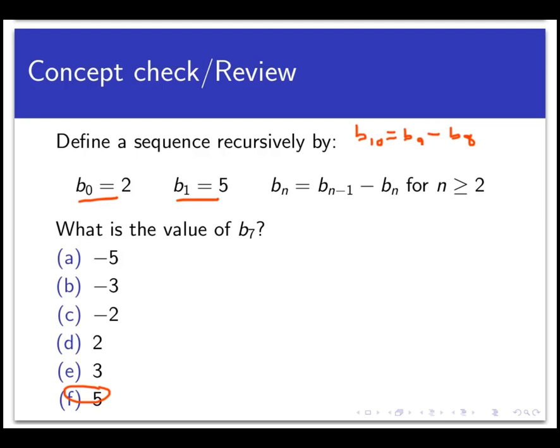We already know b_0 and b_1. We need to know b_2 and all the way up to b_7. So b_2 would be, the subscript there on n is 2, so I would be taking b_1 minus b_0. Those are known quantities, those are our base case, and so I know what they are. That's 5 minus 2, which is 3. b_3, just to go through this quickly, would be b_2 minus b_1. And since I just calculated b_2 up here in the previous line, I can put that in. 3 minus, and b_1, I'm still in the base case here. That would be 3 minus 5, which is negative 2.